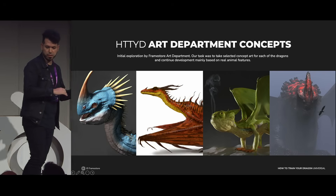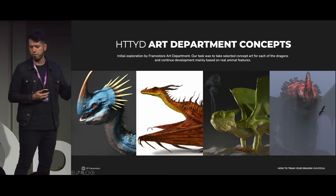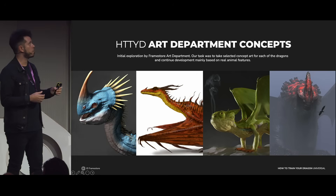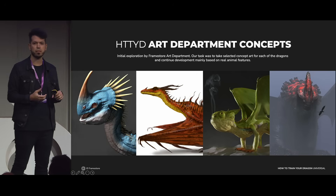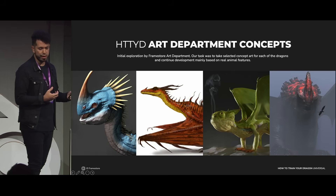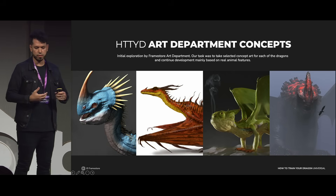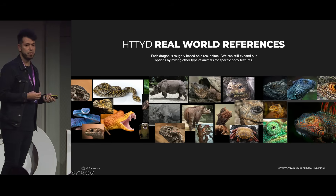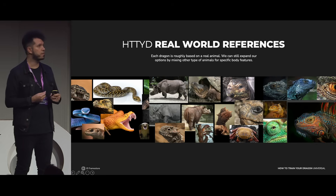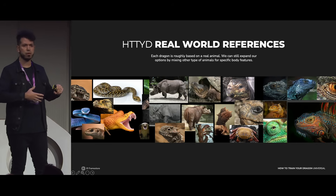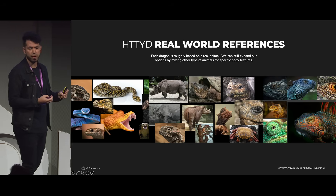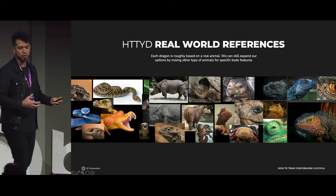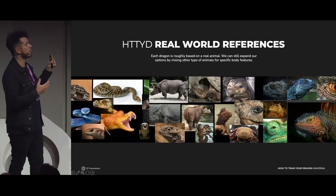The Framestore art department first started with a round of designs — sketches or sculpts — setting the initial path for each individual dragon. This was a great start for us because it meant we were starting from something the client already liked, and it was for us to keep improving. Before we do anything, we do a massive reference gather. It's about finding inspiration from real animals. Each dragon is mainly based on an animal — Toothless is like a salamander or a panther, the Deadly Nadder is like an iguana, the Gronckle is like a frog, and so on. This was a great source of inspiration and a great point of conversation with the filmmakers.